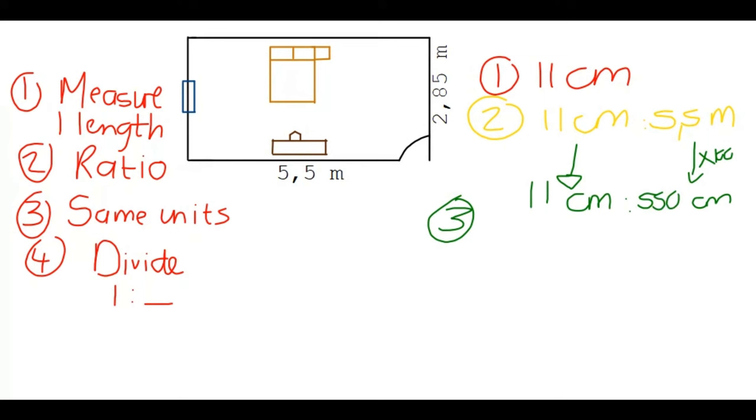And then in our last step, we need to divide. So, basically, once you have these numbers in the same units, you can leave out the units. You don't have to write that down again. So, we can drop the units. And now we need to get this to 1 to something, right?